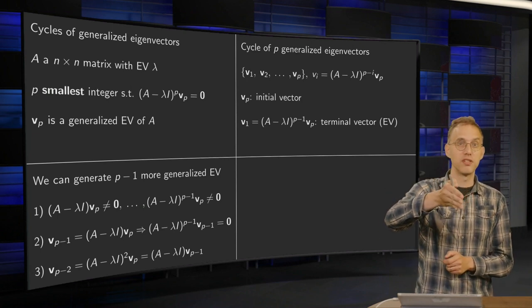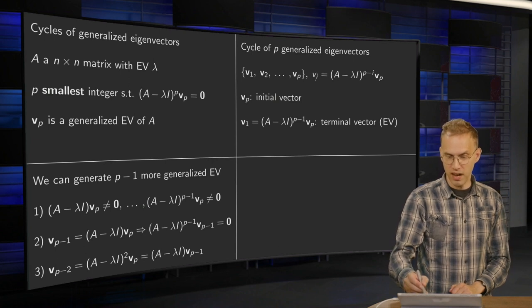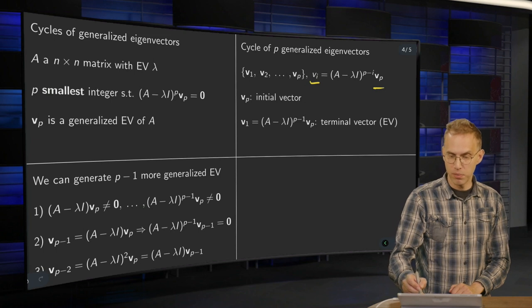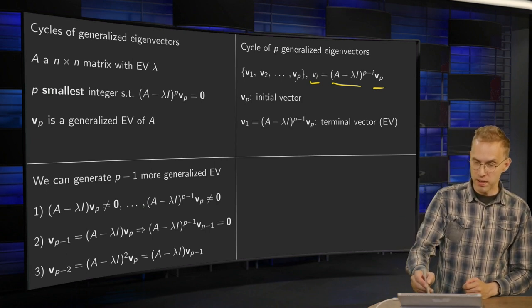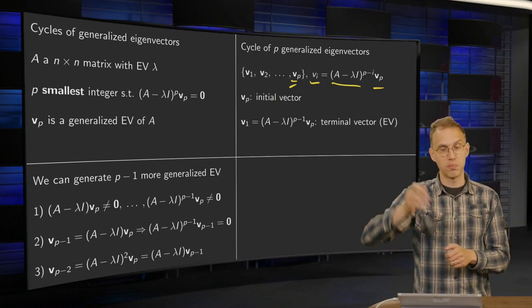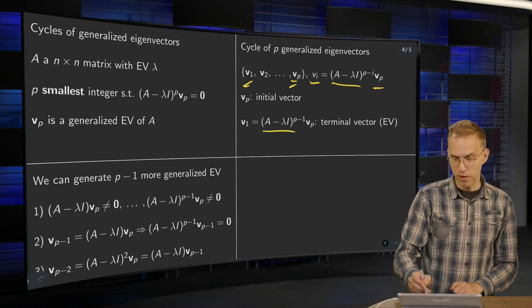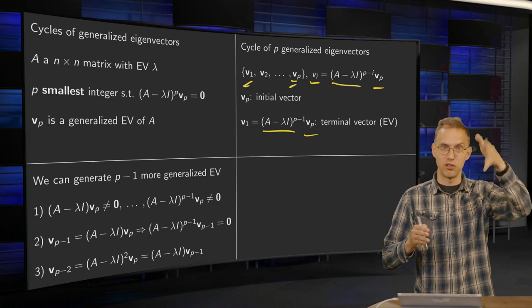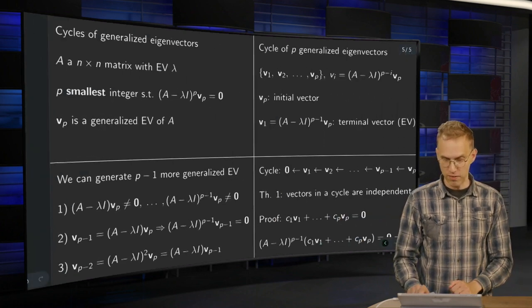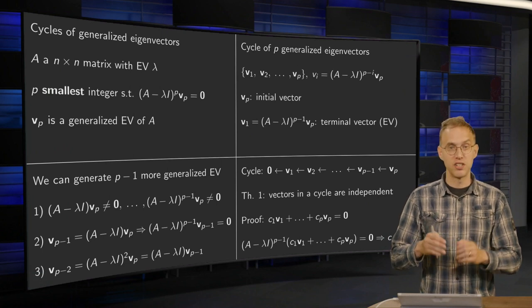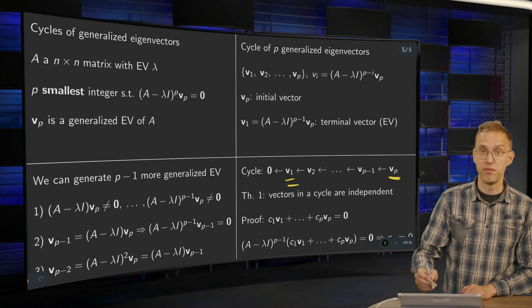This gives you a so-called cycle of p generalized eigenvectors: vp, vp−1, all the way down to v1. What you have is vp pre-multiplied by (A − λI)^(p−i) for i = 1, 2, 3, and so on. Here vp is called the initial vector — even though it is written last in the sequence — and v1, which equals (A − λI)^(p−1) times vp, is called the terminal vector. Notice that v1 is a normal eigenvector.